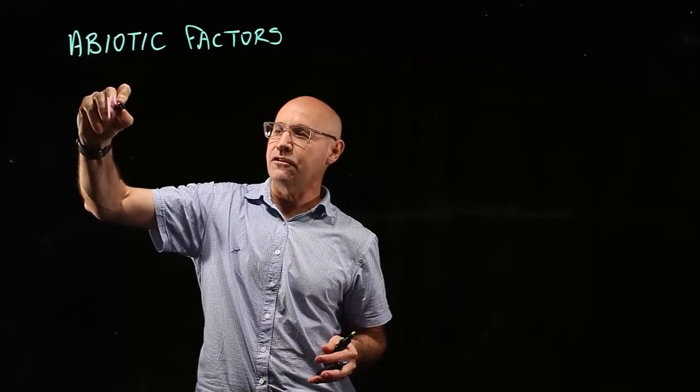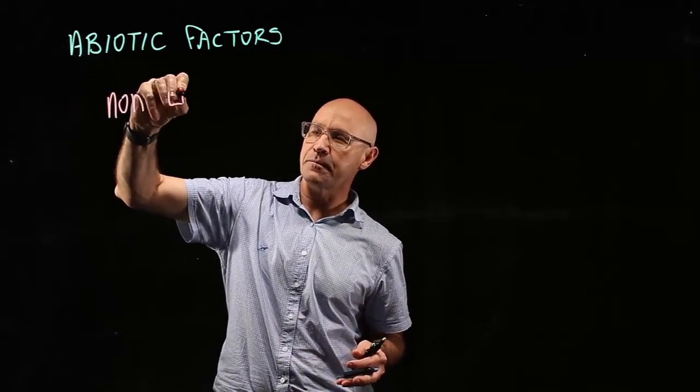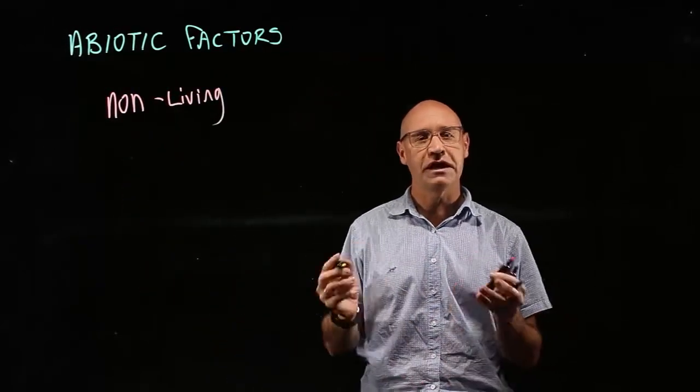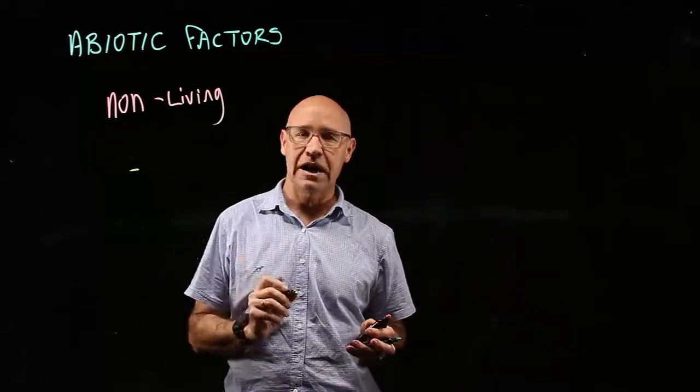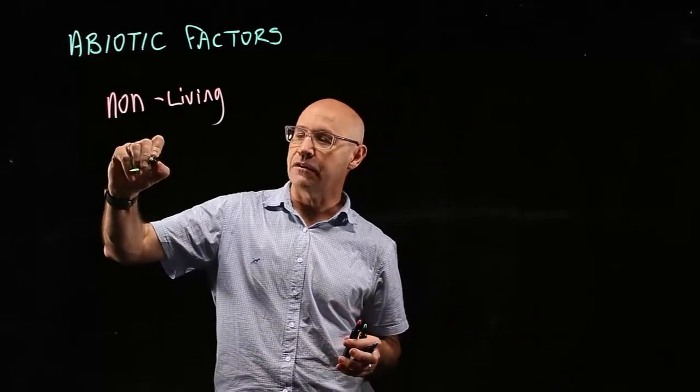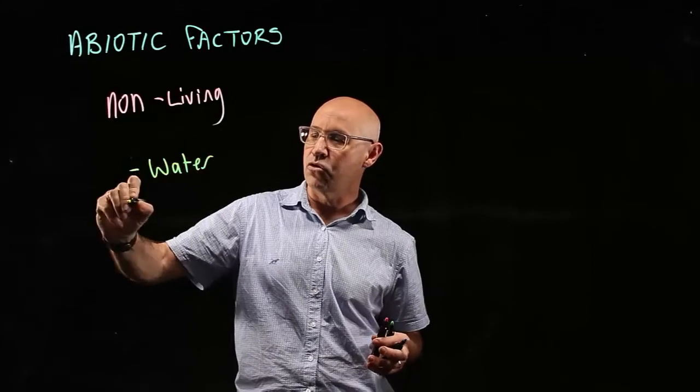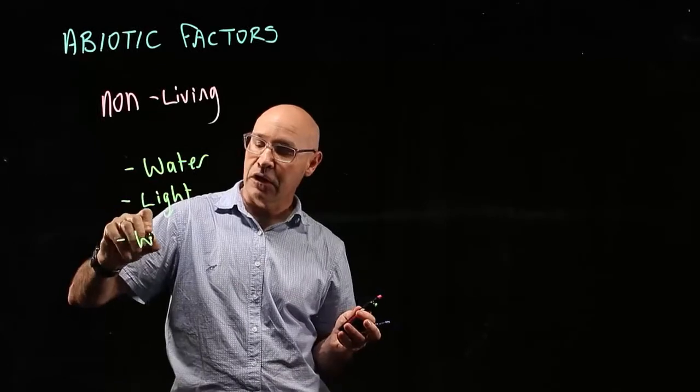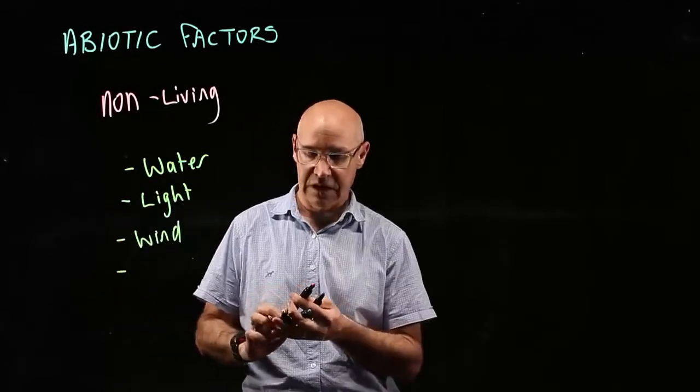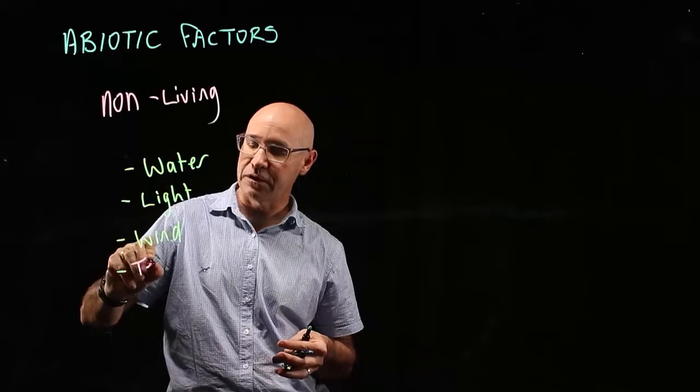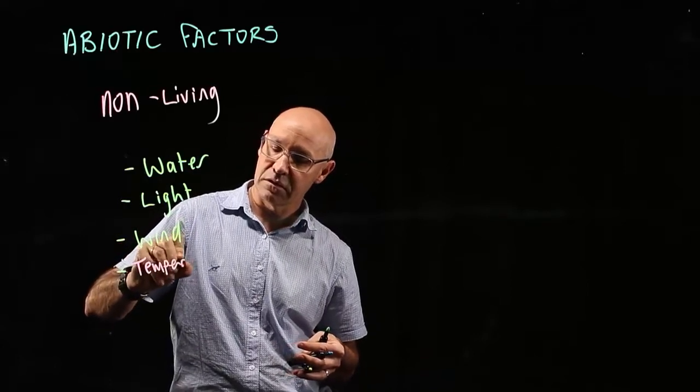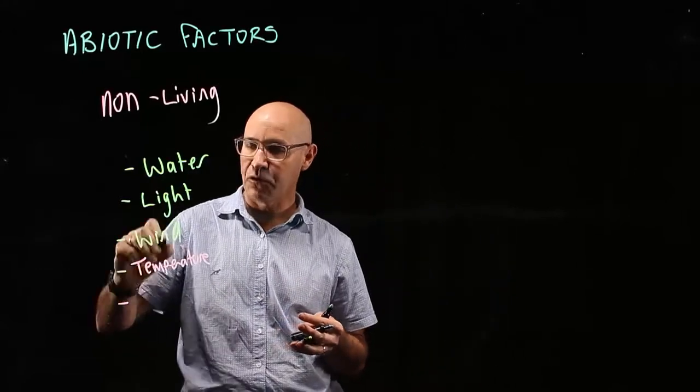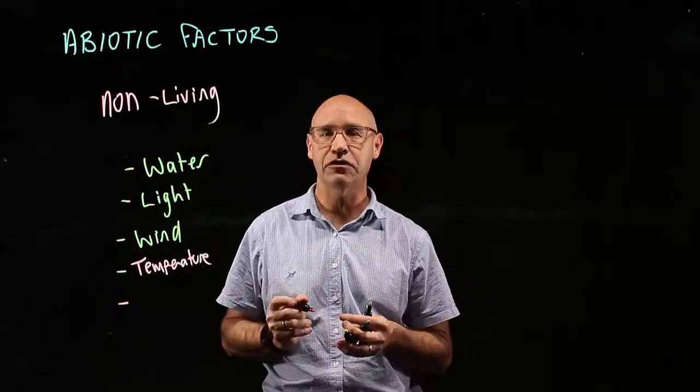Abiotic means non-living, so it's all of the non-living parts of an ecosystem. For example, we might be talking about the availability of water or light, wind, or temperature—temperature of water or air. Rainfall and water go together.